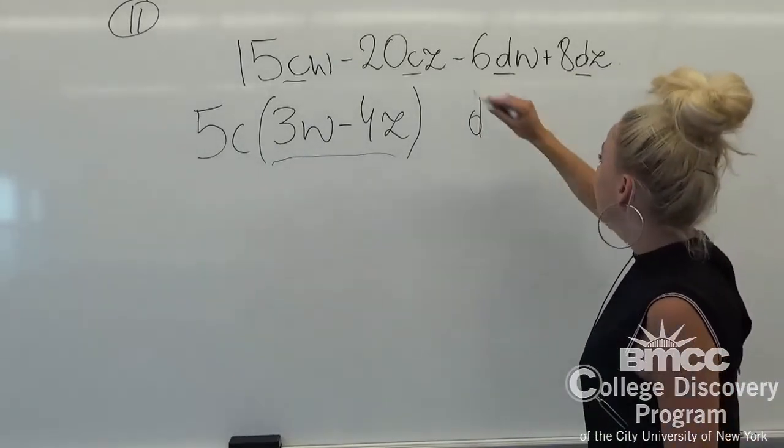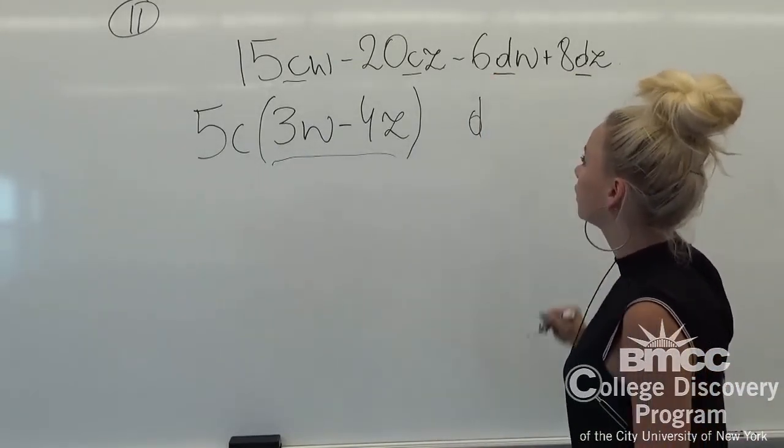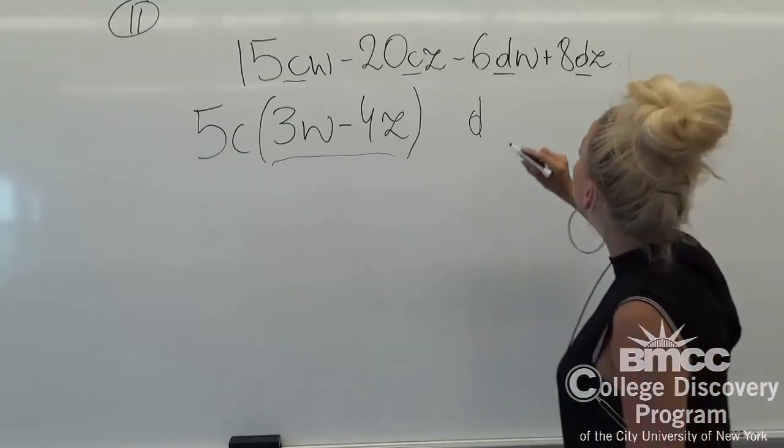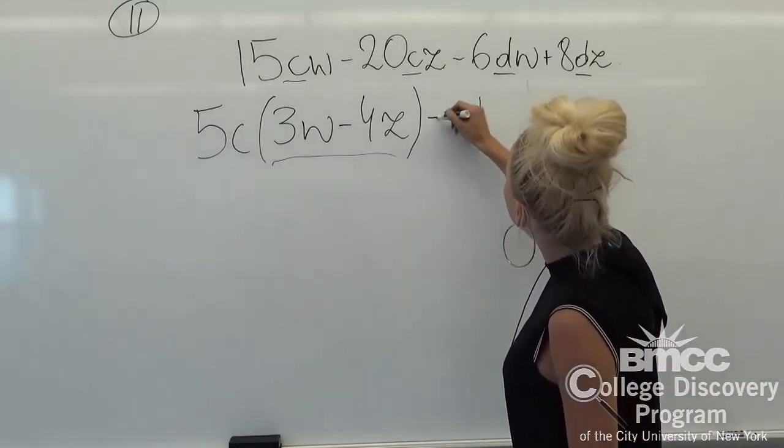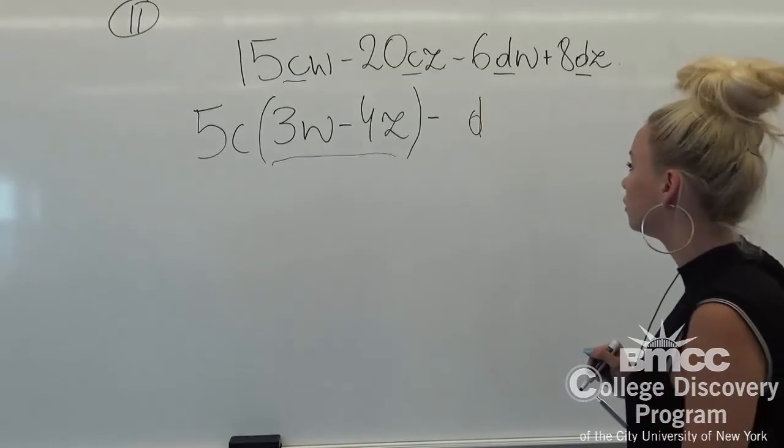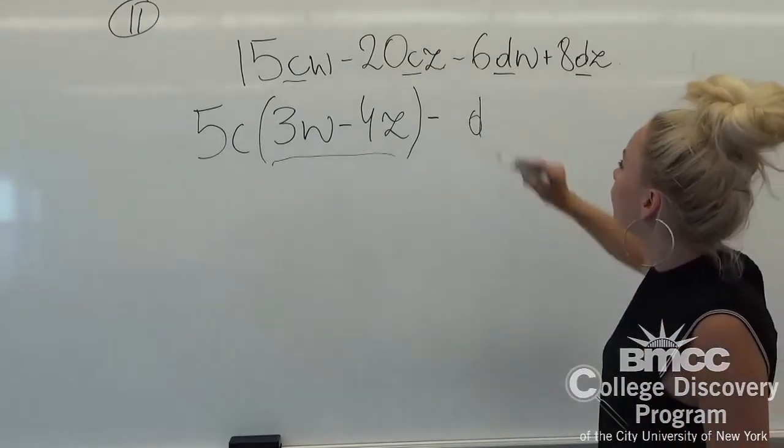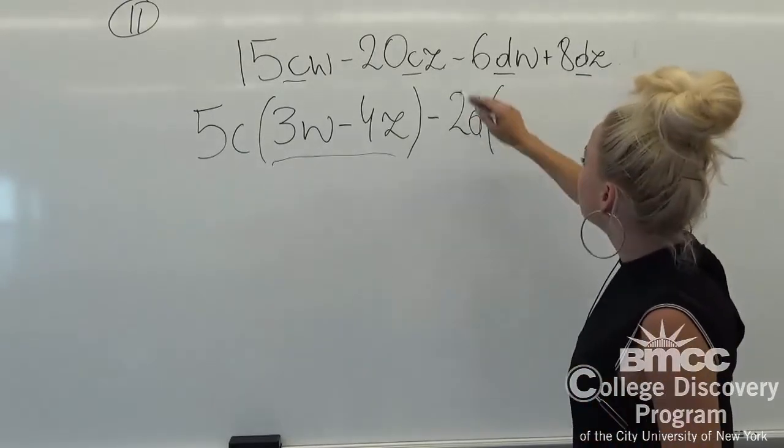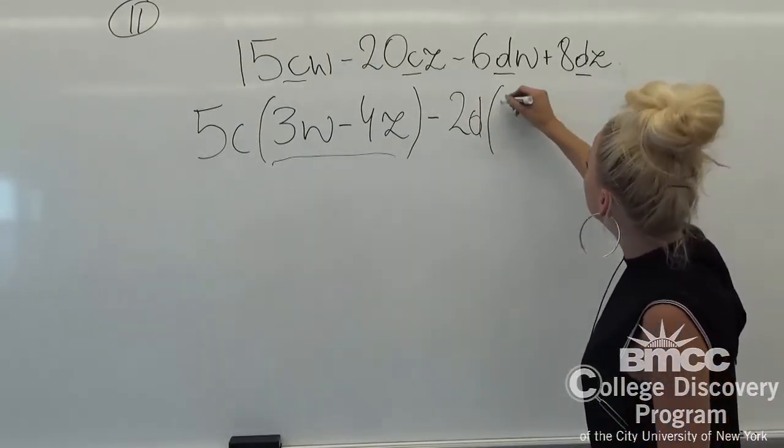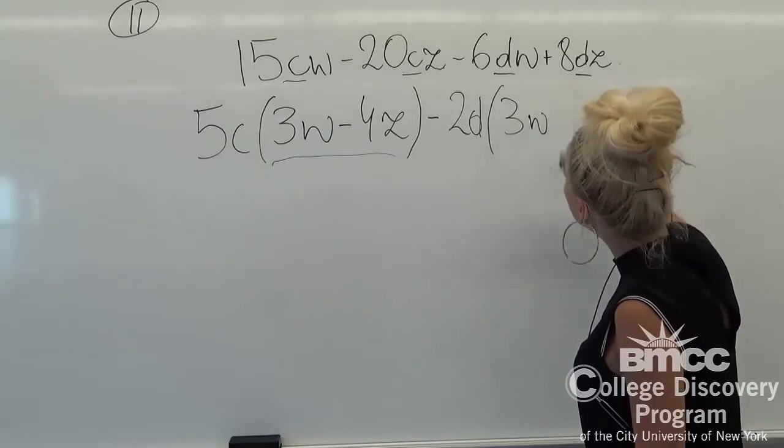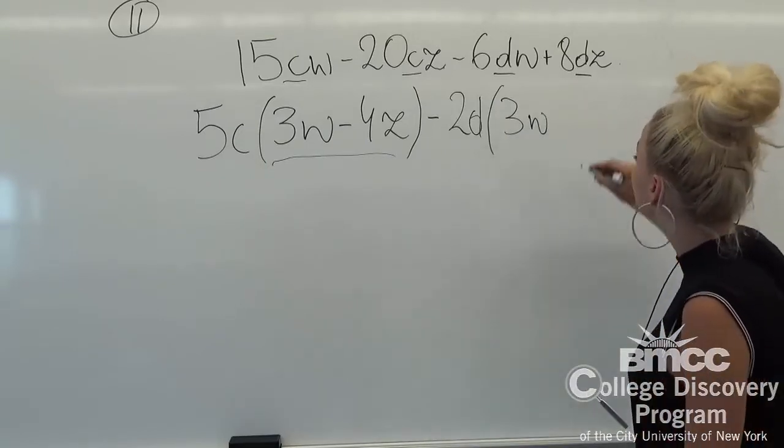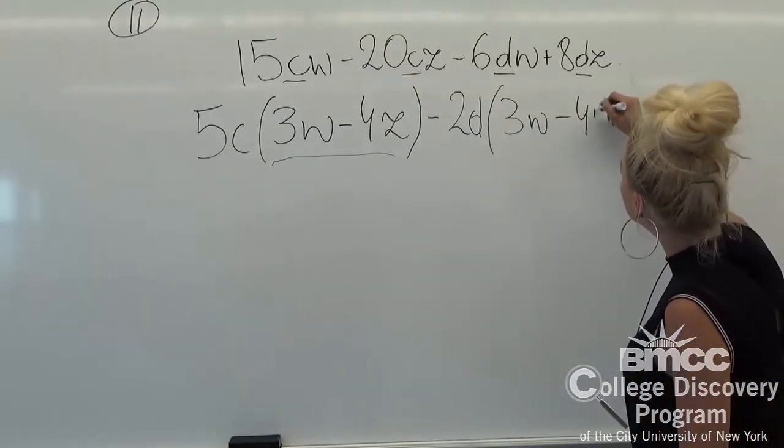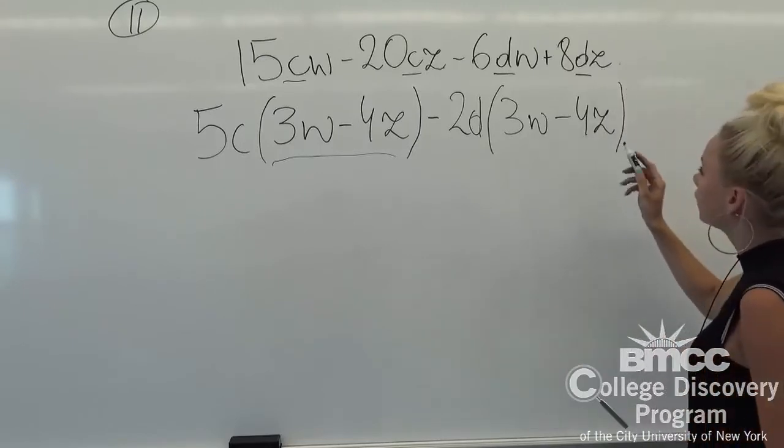From our first term we can see that we have a negative sign outside, so we'll change the sign inside of the parenthesis and we can factor out 2 from both of them. From the first term we have left 3w, and from our second term we have left 4z. Right now we can check it.